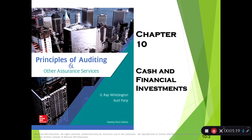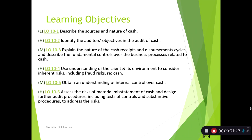There's your chapter slide. We're largely going to focus on the cash piece rather than the financial investments piece. You're going to see a fairly common set of learning objectives for a lot of these chapters going forward: beginning with understanding the source and nature of the account, identifying audit objectives, thinking about the nature of the process that impacts the account, the controls, and then using that knowledge to come up with risks, estimating control risk, and designing further procedures. We're largely using a lot of those stages, separating them into different learning objectives.